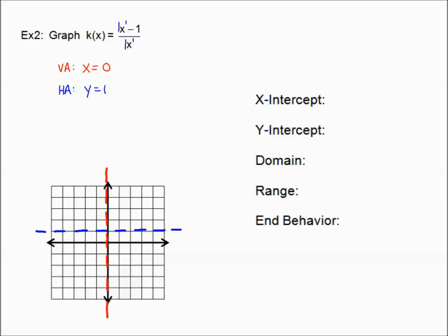y equals one is right here — this horizontal asymptote. Next, let's look for our x-intercept from the numerator. Setting the numerator equal to zero, we get x equals one. So we do have an x-intercept. As an ordered pair that's (1, 0), and let's plot that to help us with our curve.